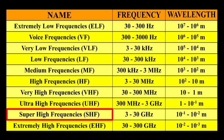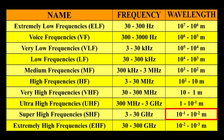Super high frequencies, i.e. SHF, the frequency will be 3 to 30 GHz. The wavelength will be 10 raised to minus 1 to 10 raised to minus 2 meters.